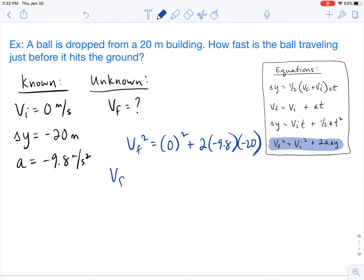So let's simplify. VF squared is going to equal, well, 0 squared is 0. 2 times negative 9.8 times negative 20 gives us a value of 392.